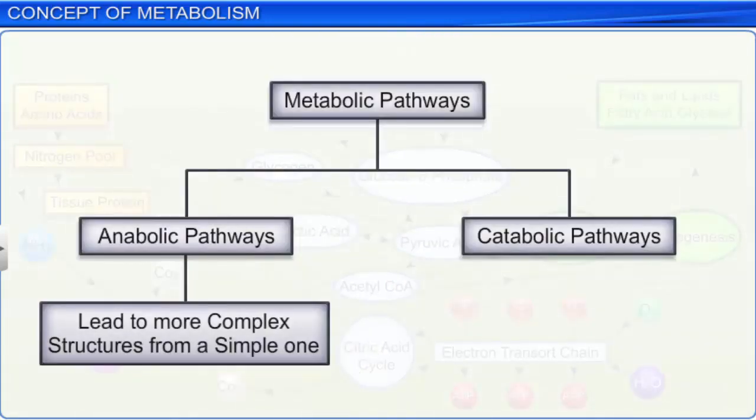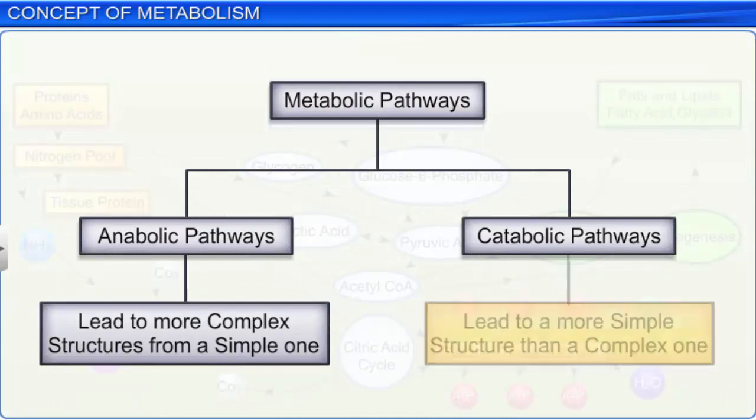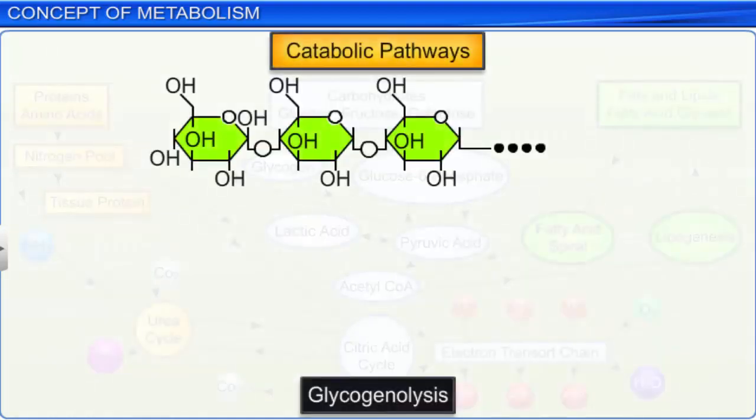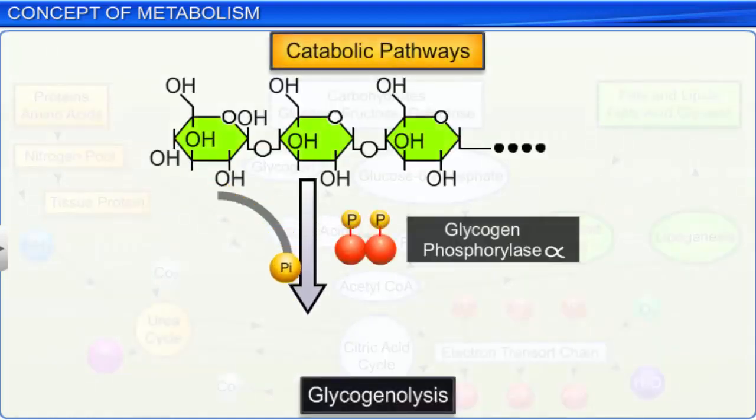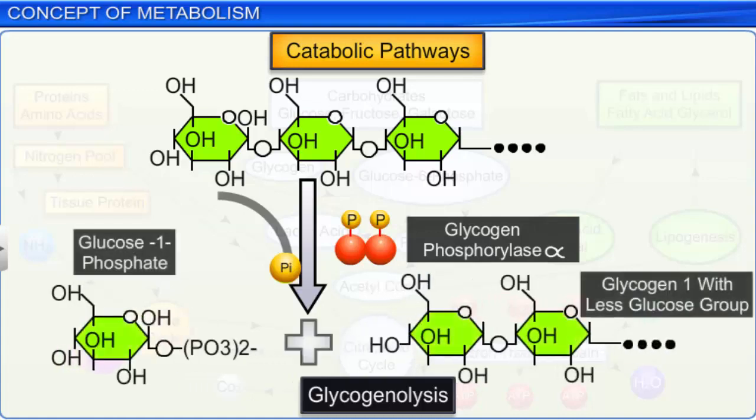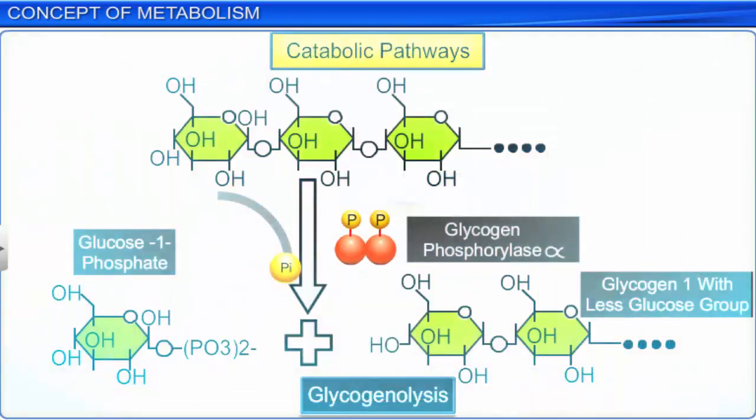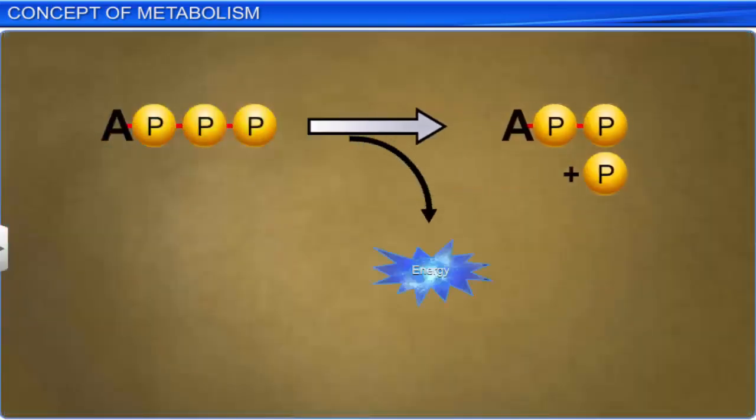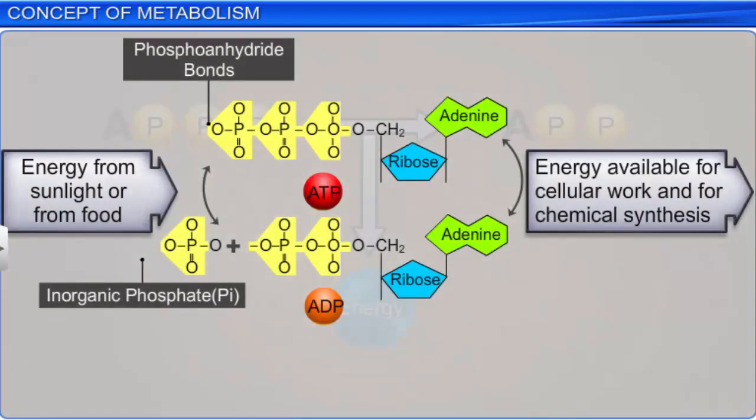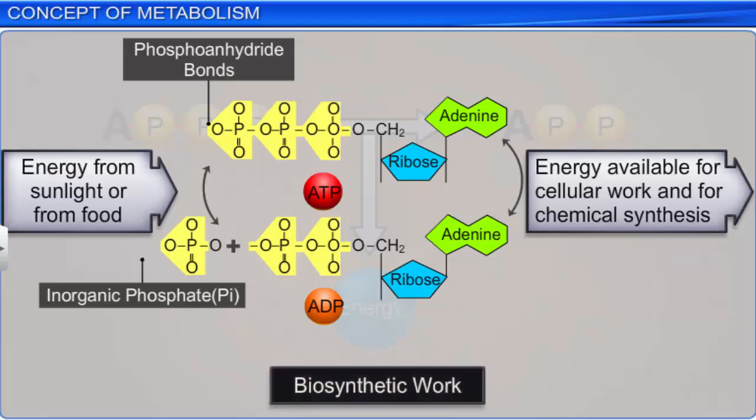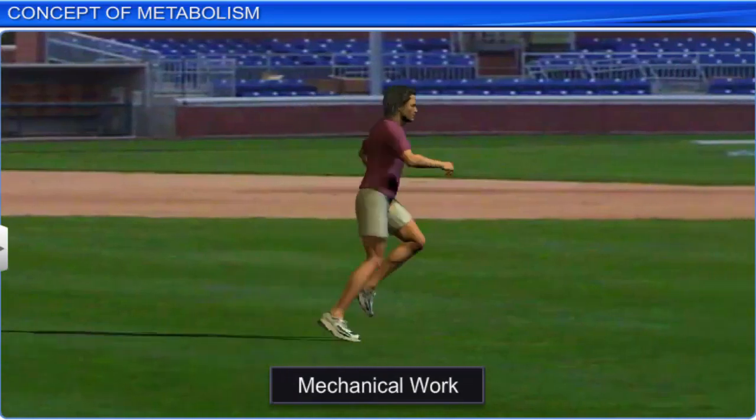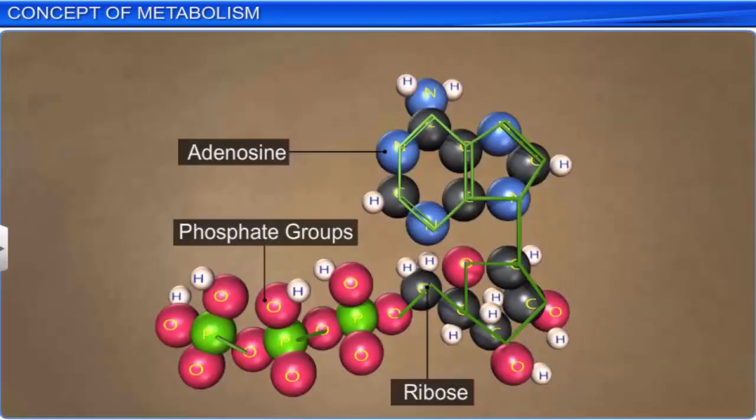On the other hand, catabolic pathways lead to a simple structure from a complex one. They involve degradation, and also lead to a release of energy. For example, the process of glycogenolysis, which leads to the breakdown of glycogen to glucose. The energy released during degradation is trapped by living organisms, and stored as chemical bonds. Later, this bond energy is utilized for biosynthetic, osmotic, and mechanical work, whenever the need arises. The most important biomolecule that contains energy in its chemical bonds is adenosine triphosphate, or ATP.